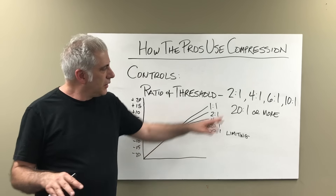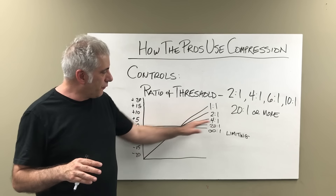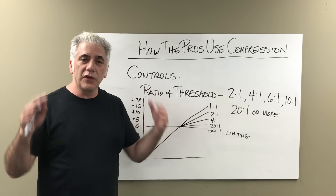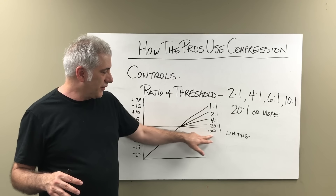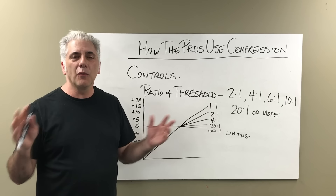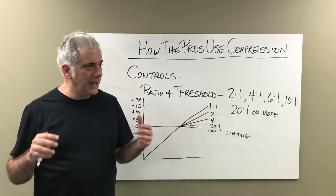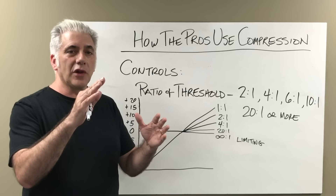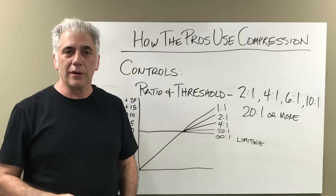Here are your compression curves: 1:1 means it's not even on. At 2:1 you're just reducing the dynamics a slight bit. At 4:1 you're reducing a little more. At 20:1 and infinite to one, you're limiting. 20:1 is going to sound like limiting anyway. Limiting is where the sound goes up, hits a brick wall, and doesn't go any louder.